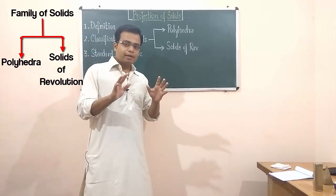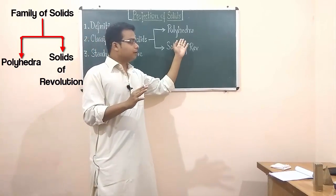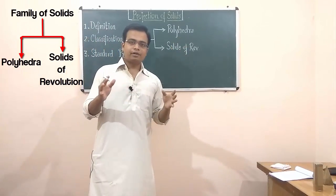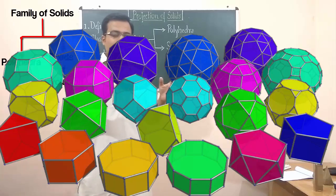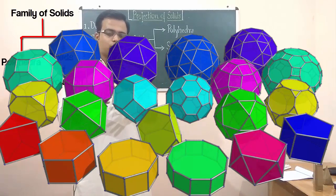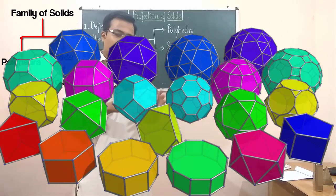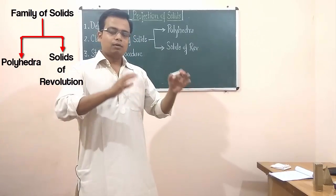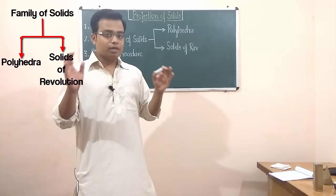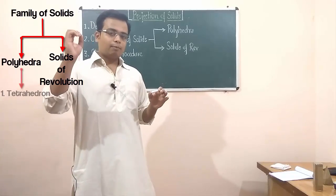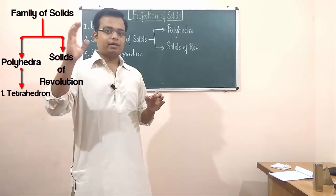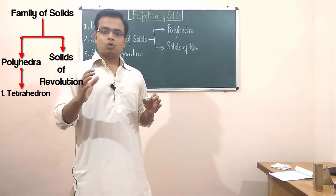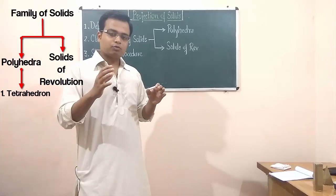Polyhedra is a solid bounded by plane figures or faces. When those faces are equal and regular, that sort of polyhedra is referred to as a regular polyhedron. There are different types of polyhedrons — number one is the tetrahedron.